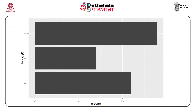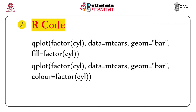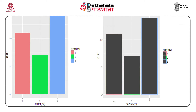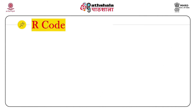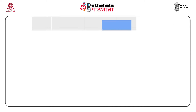Look at the output and observe the difference with the previous one. Now let us do some experimentation with the colors. Have a look at the two R codes. Observe the difference in the outputs when using color = factor(cyl) instead of fill = factor(cyl). You can also fill by variable — here we have used fill = factor(gear). Look at the output: we are getting a component type of bar diagram, which is very interesting.